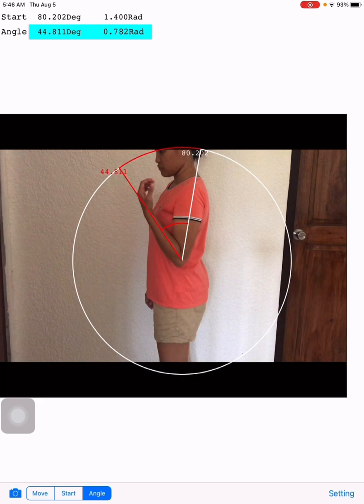You can add or put this on your ROM table. Basically that's it. This is a basic software or app that you can use for measuring the range of motion.